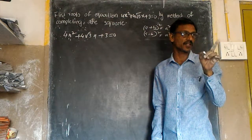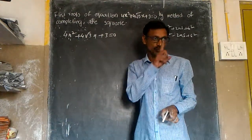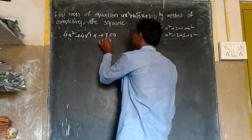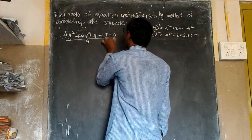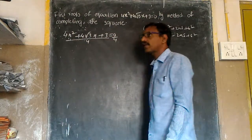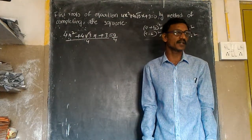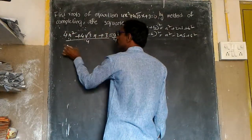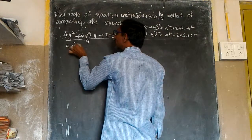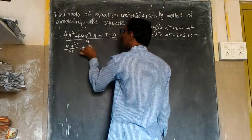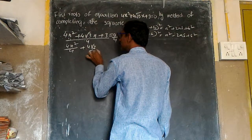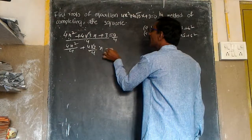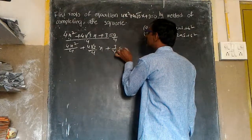For completing square method, first step is to make the x² coefficient equal to 1. Here the coefficient is 4, so we divide the entire equation by 4. So 4x²/4 + 4√3x/4 + 3/4 = 0.